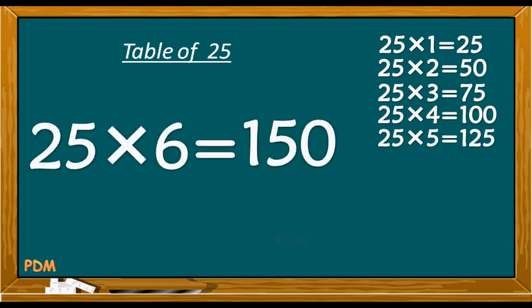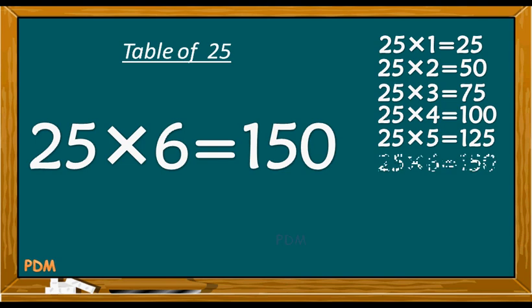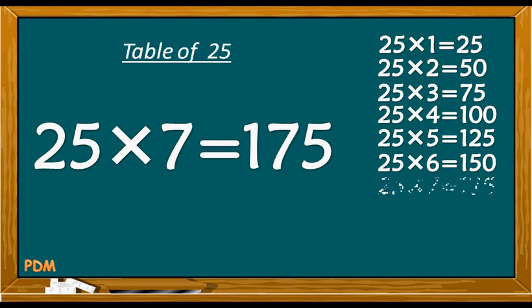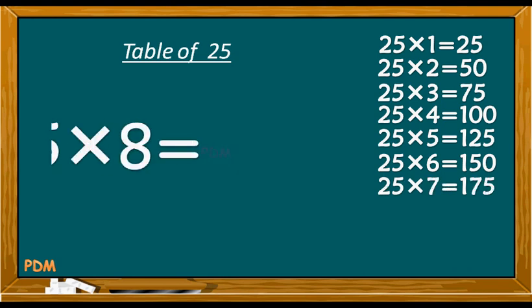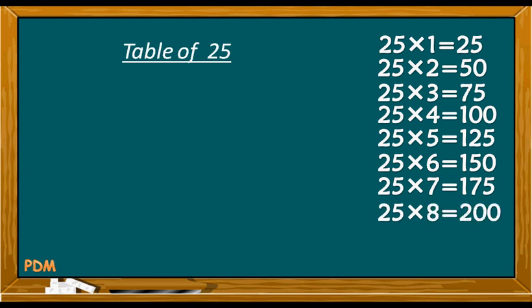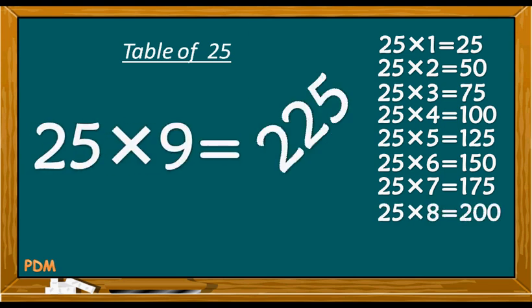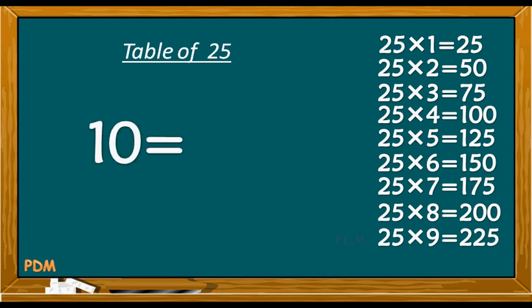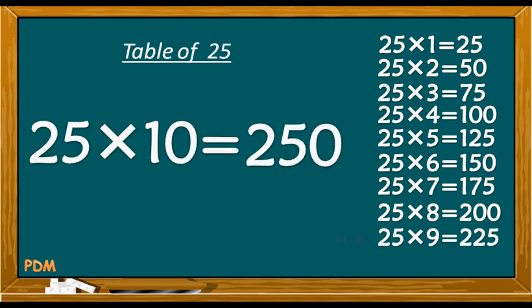25 sixes are 150. 25 sevens are 175. 25 eights are 200. 25 nines are 225. 25 tens are 250.